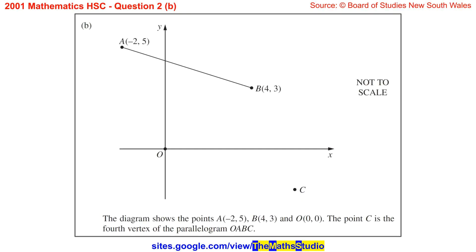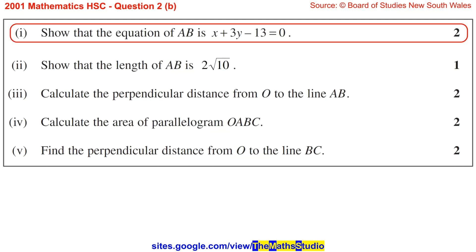Question 2b. The diagram shows the points A, B and O. The point C is the fourth vertex of the parallelogram OABC. Part 1: Show that the equation of AB is x plus 3y minus 13 equals 0.